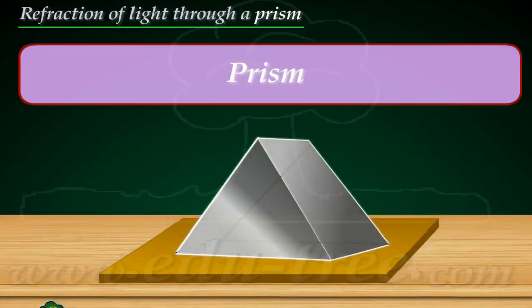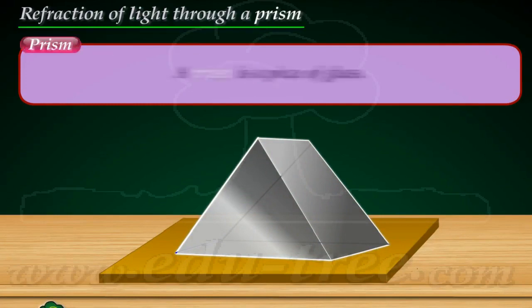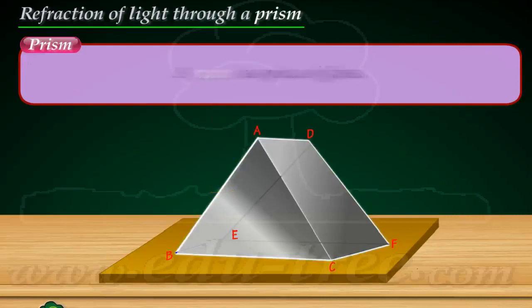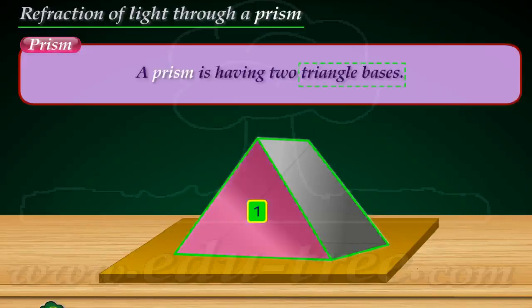Prism. A prism is a piece of glass. A prism has two triangular bases.